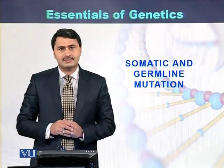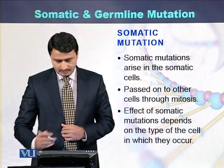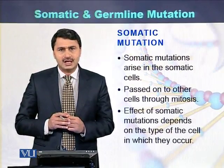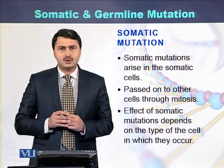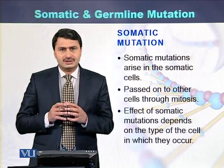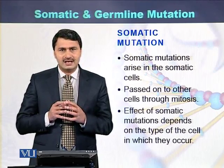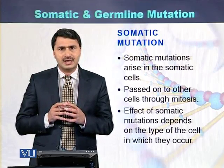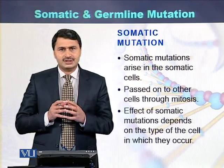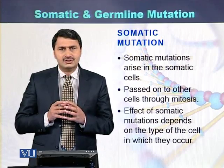Somatic mutations and germline mutations. Somatic mutations are those mutations which occur in the somatic cells. These kinds of mutations pass on to other cells through cell division, which is called mitosis. The effect of such mutations depends on the cells in which they occur.